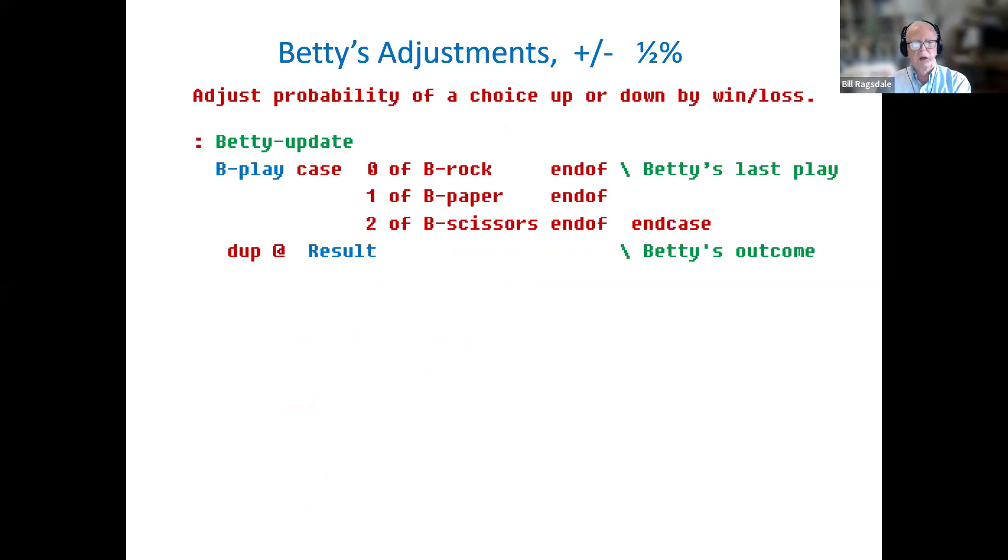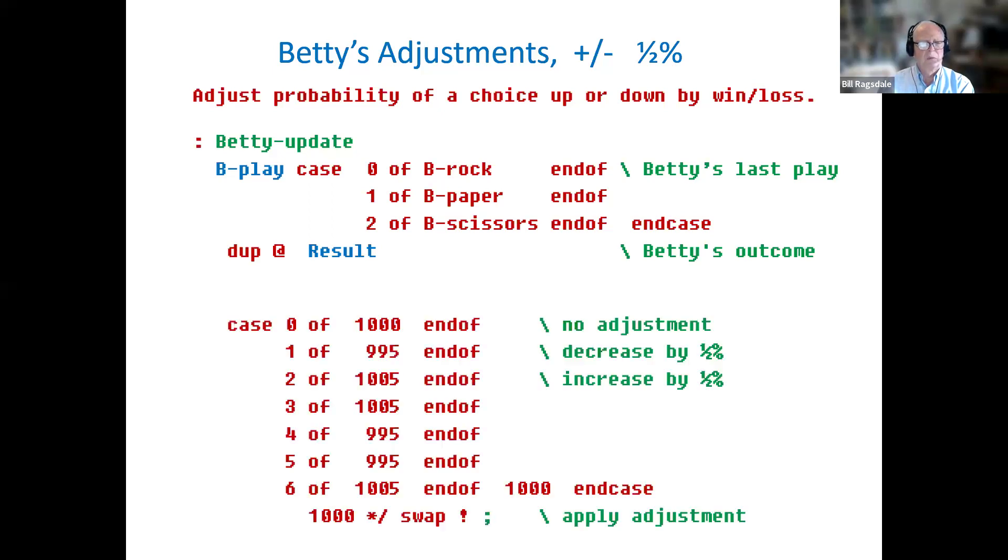The Betty's update will do the Betty's play. And then it will look at the output cases of 0, 1, 2, 3. That result will then apply and compare to the result. The second half of this, then, is for the resulting situation. If the case is 0, the Betty's will be adjusted by the value of 1,000, which represents 1. And so this is no change to Betty's probability.